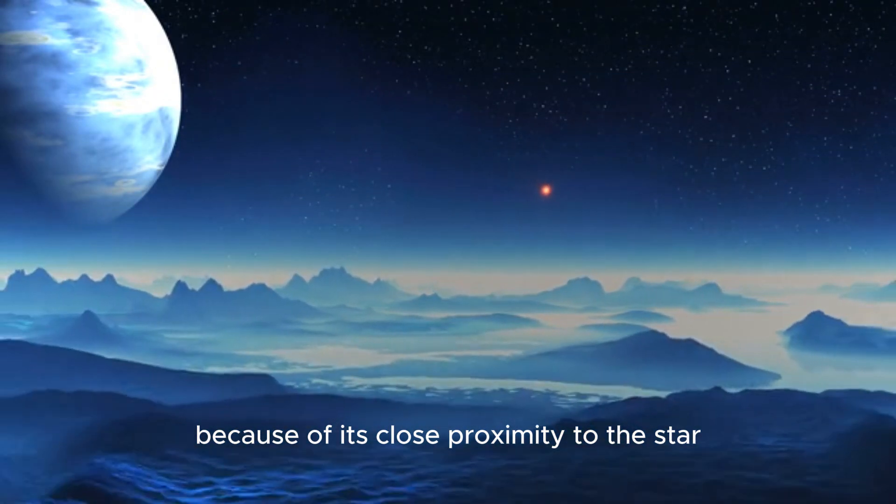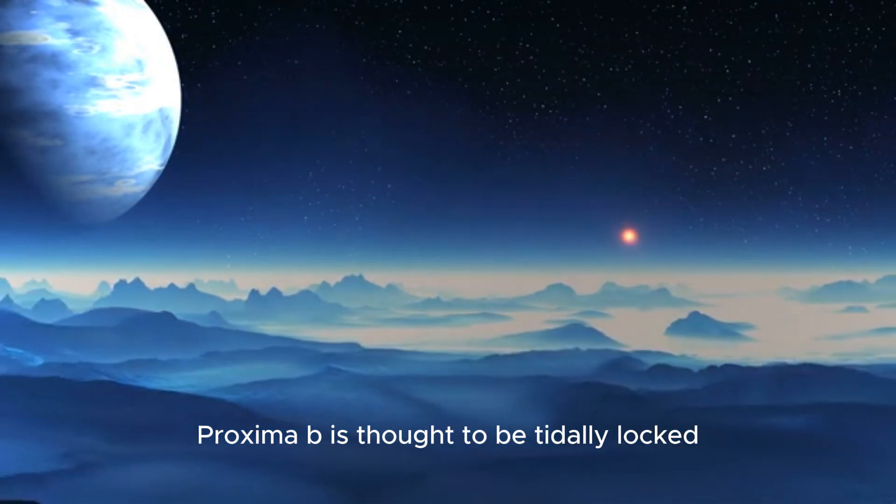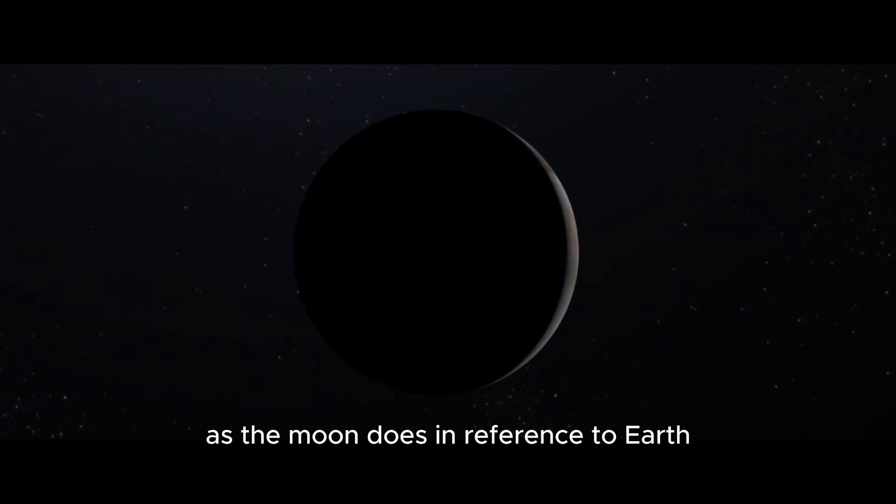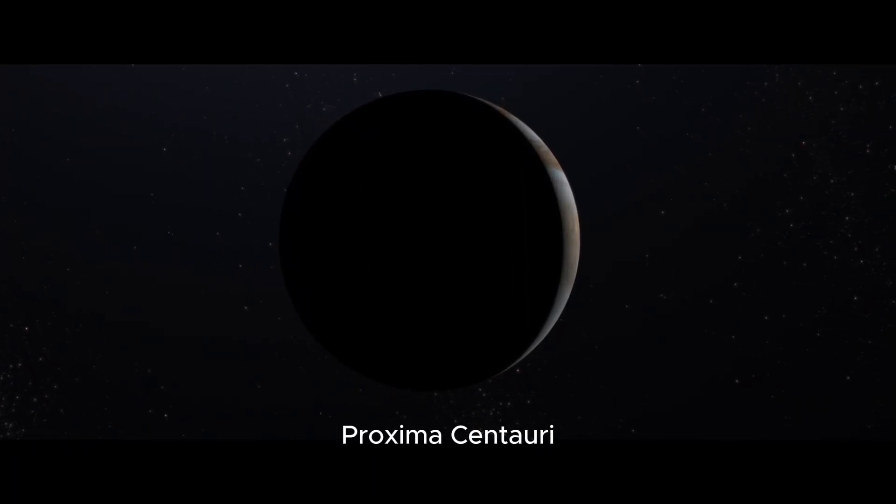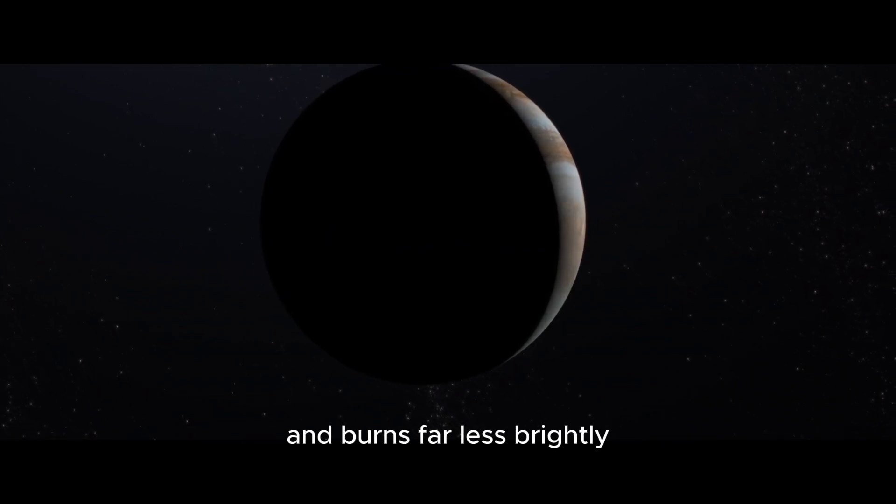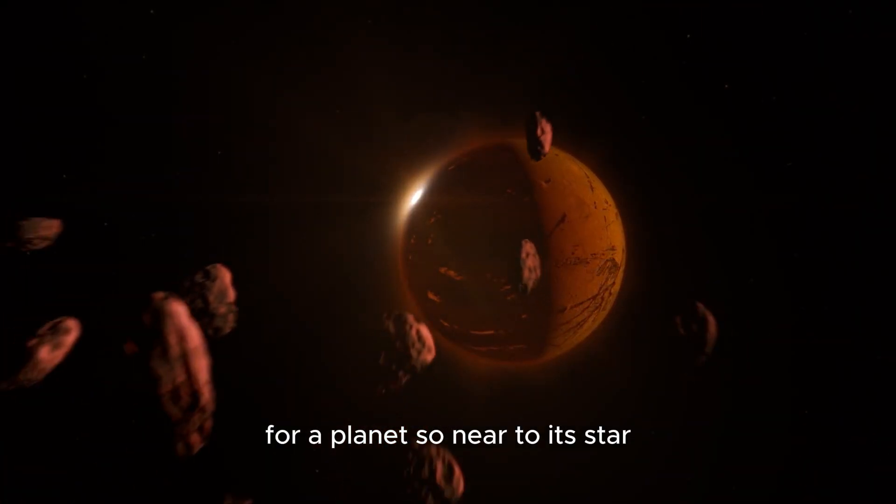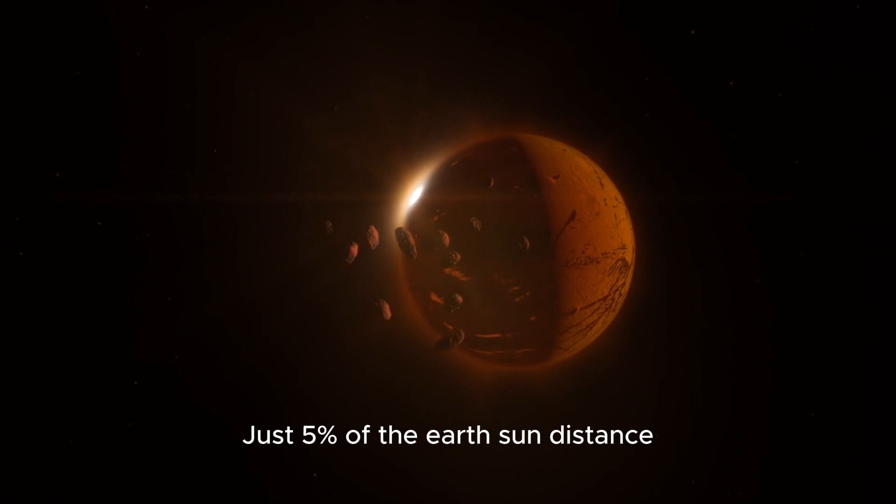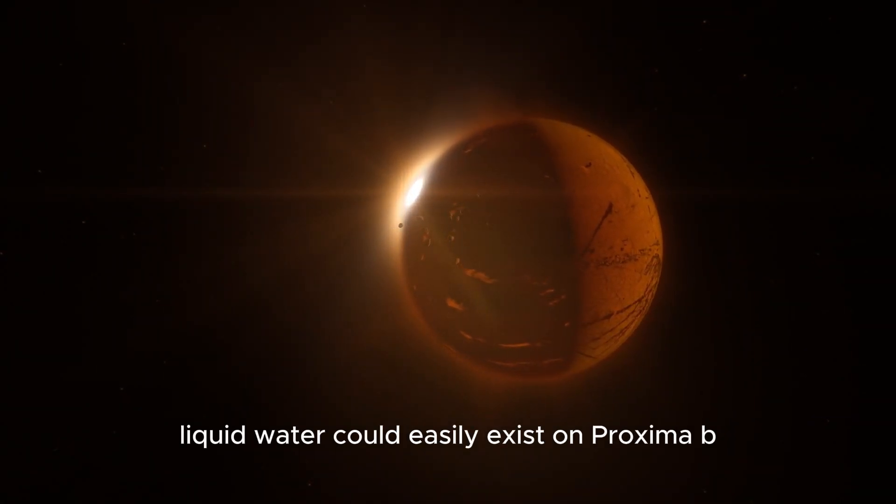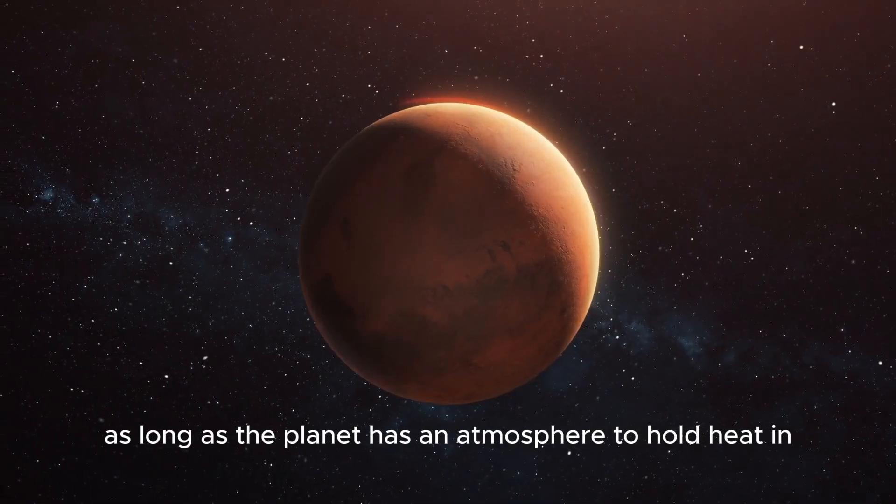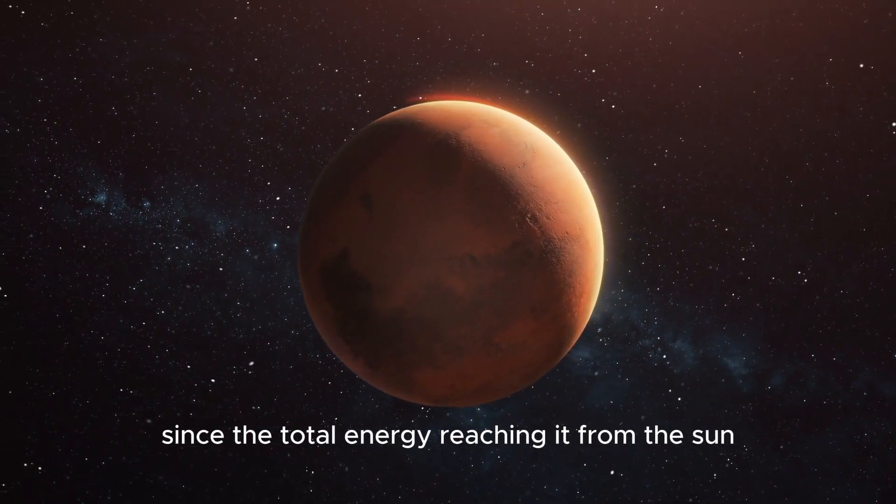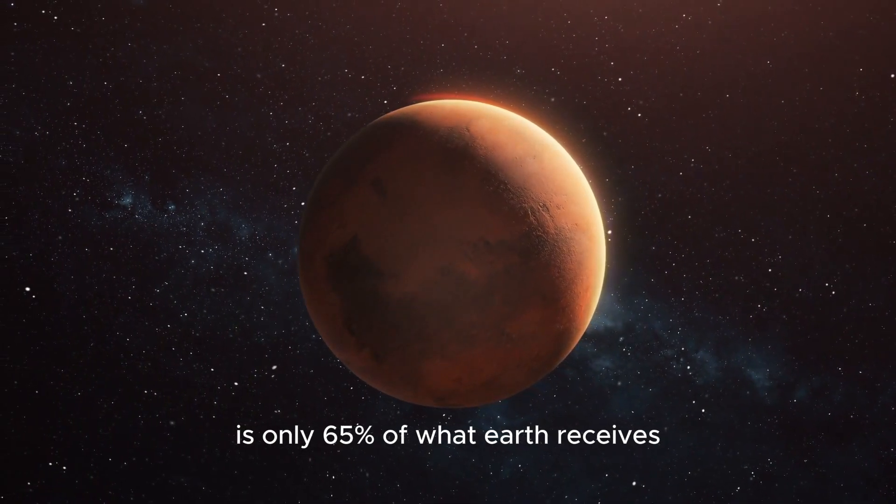Because of its close proximity to the star, Proxima b is thought to be tidally locked, always showing the same side to the star as the Moon does in reference to Earth. Proxima Centauri is about one-eighth the mass of the Sun and burns far less brightly. For a planet so near to its star, just 5% of the Earth's Sun distance may be anticipated to be a red-hot cinder. Liquid water could easily exist on Proxima b as long as the planet has an atmosphere to hold heat in since the total energy reaching it from the Sun is only 65% of what Earth receives.